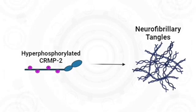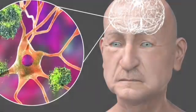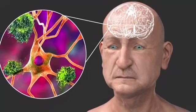In addition, hyperphosphorylation of CRIMP2 can also accumulate through the formation of NFTs, which can lead to the loss of communication between neurons.